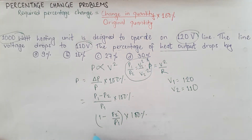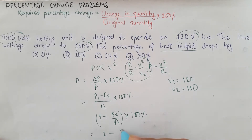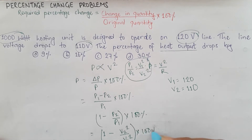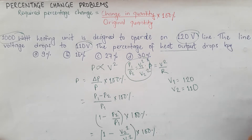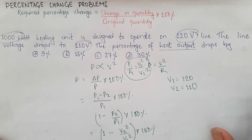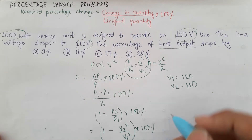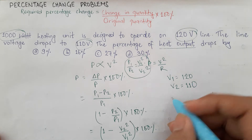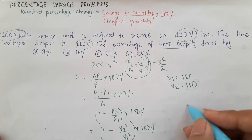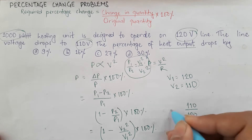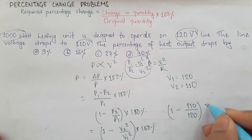The expression becomes: 1 minus (V2²/V1²) into 100%. Putting in the values, this is 1 minus (110/120)², into 100%.